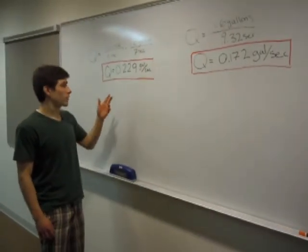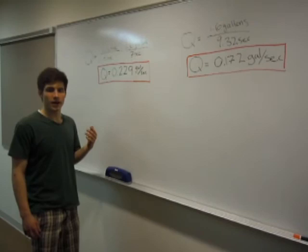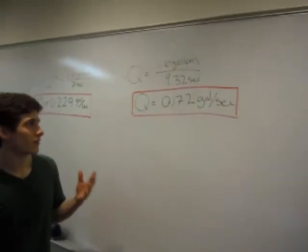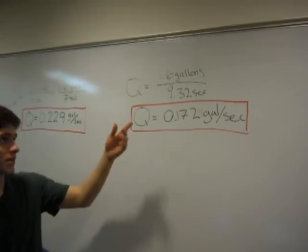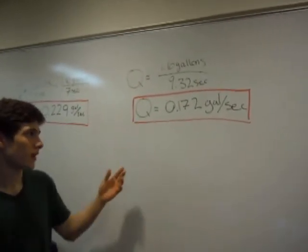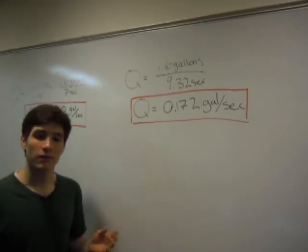Now let's compare the flow rate of a toilet in ECB to an average household toilet. When measuring an average household toilet, we determined that 1.6 gallons of water was flushed in 9.32 seconds, giving us a flow rate of 0.172 gallons per second.